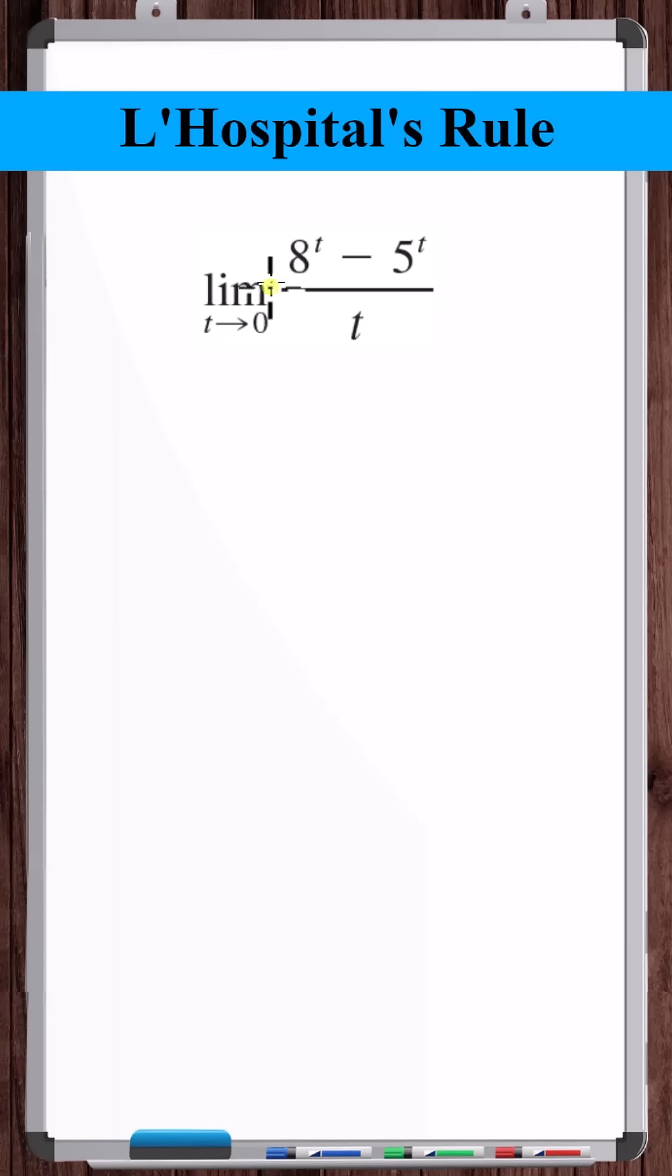What is the limit as t approaches 0 of 8 to the t minus 5 to the t all over t?